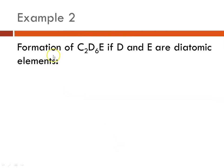Second example. What if we were forming the compound C2D6E where D and E are diatomic? So now we have to be a little bit more thoughtful about this. So C2 means I need two carbons. D6 means that I need three of the element D because it's diatomic. And I only need one of element E so it's going to have to be one half of E to the diatomic so that I get the correct amount of each element on each side of the equation.